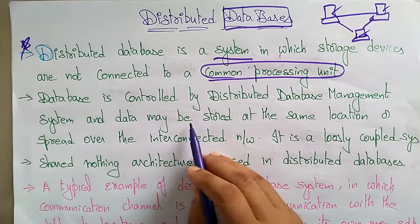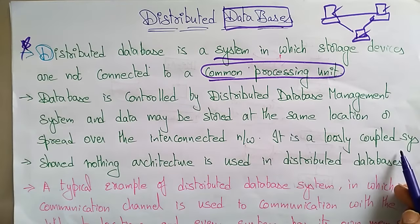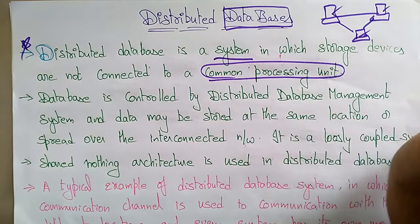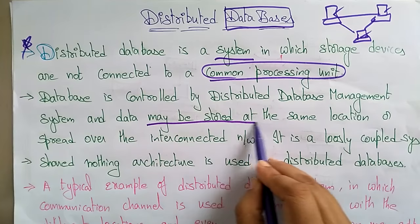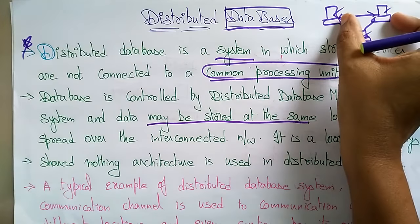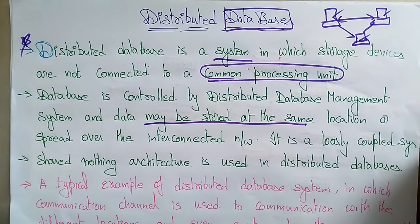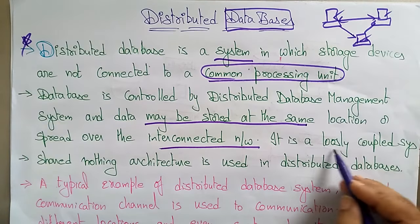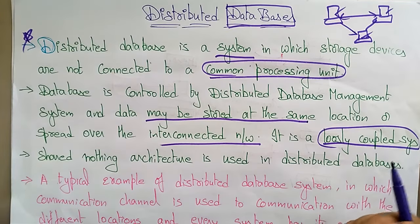The database is controlled by a distributed database management system, and data may be stored at the same location or spread over an interconnected network. It is a loosely coupled system. The distributed database management system and data can spread over different systems present at different locations through an interconnected network. Every system can access the data whenever it is required.